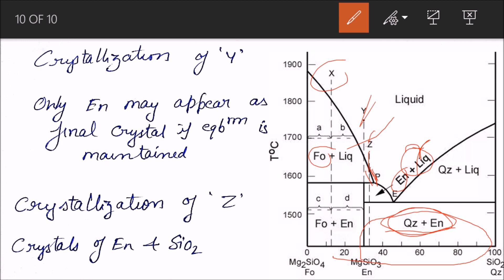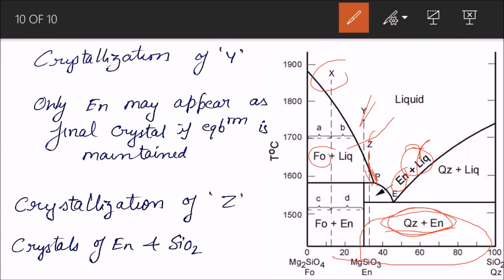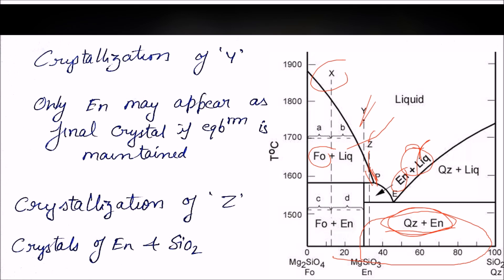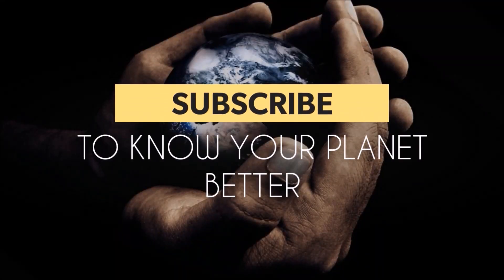That covers this video. Depending on where the initial composition lies in the diagram, you can determine the final mineral assemblage. In the next video we will start with solid solution, which is also a binary phase diagram but involves solid solution series like albite-anorthite, plagioclase, and olivine. Thank you — keep reading, keep revising, and subscribe to know your planet better.